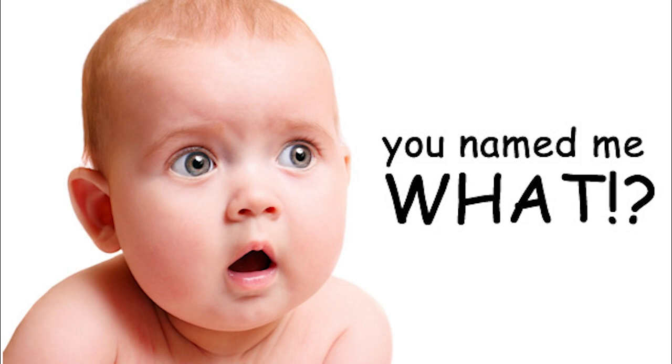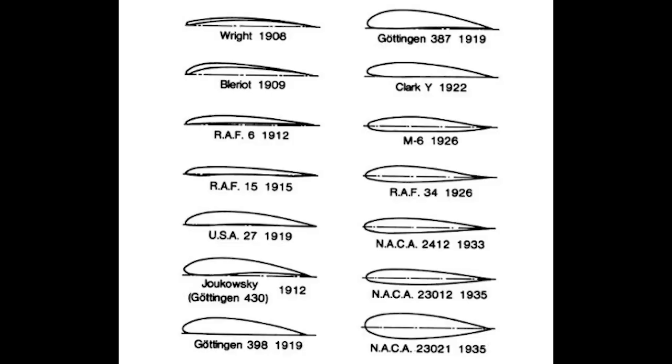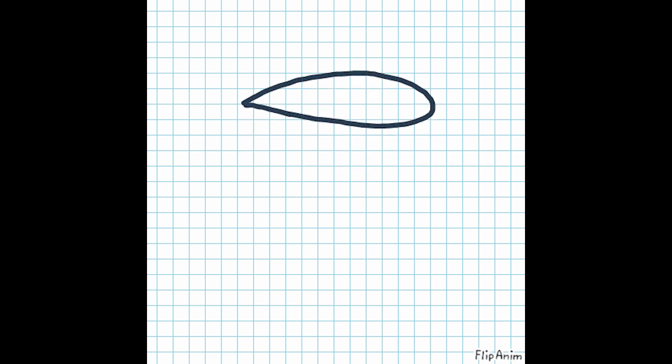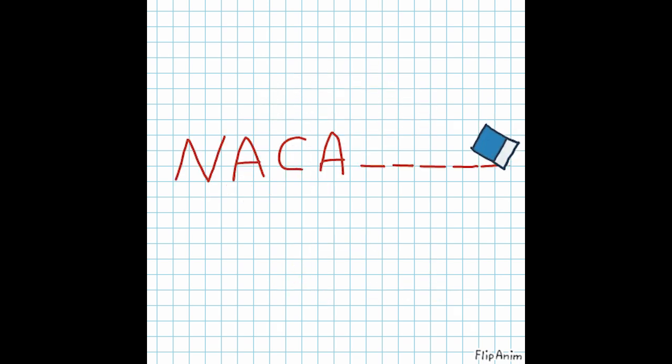Everything in this world needs a name if we want to get more familiar with it, and airfoils are no exception to this rule. We can name them in various ways within their proper naming system, but in this video we want to focus on the most common system: the NACA naming system. In this system, airfoils are named with NACA followed by four or five digits.